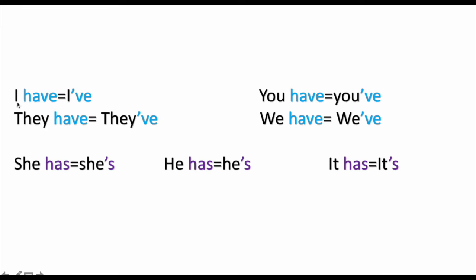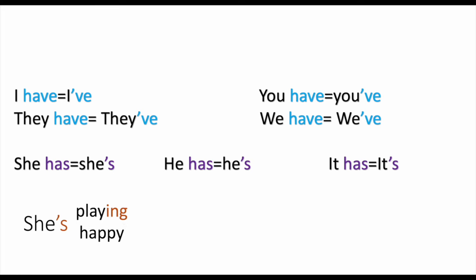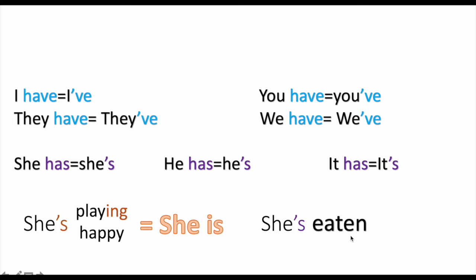Short forms: I have → I've, you have → you've, they have → they've, we have → we've, she has → she's, he has → he's, it has → it's. Now, how do you know if it is 'has' or 'is'? If you see 'she's' or 'he's' followed by an '-ing' form or an adjective, it is 'she is' or 'he is'. But if it is followed by the past participle or third form of the verb, then it is 'has'.